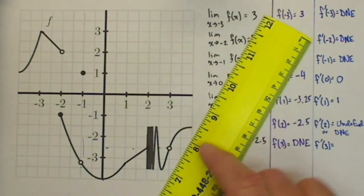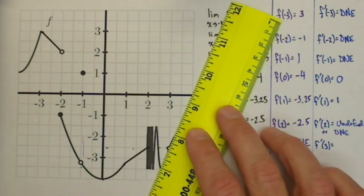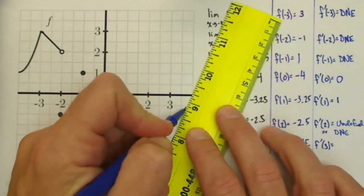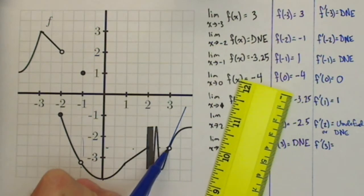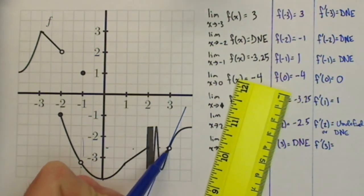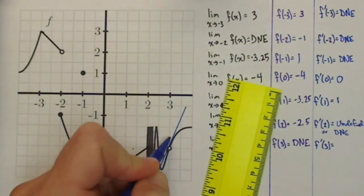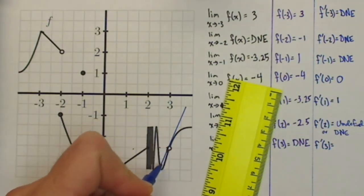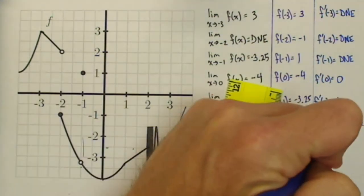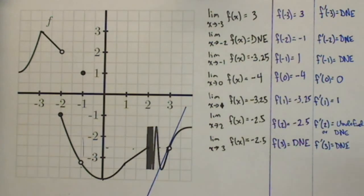Lastly, at 3, 3 is an interesting one. It looks like there should be a tangent line right here. Here's the problem. We don't have any function value at this point. If the function doesn't exist at that point, how can we have a tangent line at that point? So while it looks like we should have a tangent line, we actually don't, because that point does not exist, so the derivative at that point does not exist.